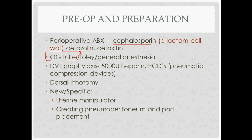The Foley decompresses the bladder, making it thicker rather than distended and thin, which reduces the chance of injury. The OG tube helps prevent air from getting into the GI tract, reducing GI injury risk — especially important in laparoscopic procedures. DVT prophylaxis includes heparin, pneumatic compression boots, and dorsal lithotomy positioning.